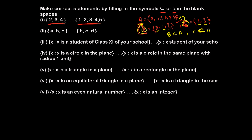Now let's check whether a given first set is a subset of a second set. The first set includes members 2, 3, and 4. If these members are all in the second set, then the first set is the subset of the second one — otherwise not. Checking: 2 is present, 3 is present, and 4 is also present. All the elements of the first set are inside the second set, so yes, the first set is the subset of the second one.